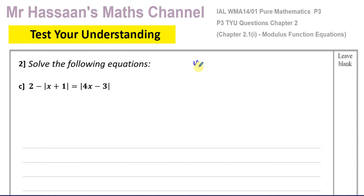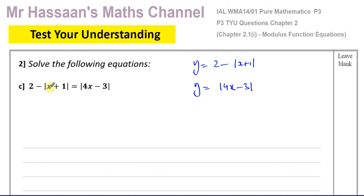If we sketch the graph of y equals 2 minus the modulus of (x+1) and also y equals the modulus of (4x-3) on the same diagram, we will be able to see where the solutions to this equation are — that's going to be where they intersect, where they're equal to each other.